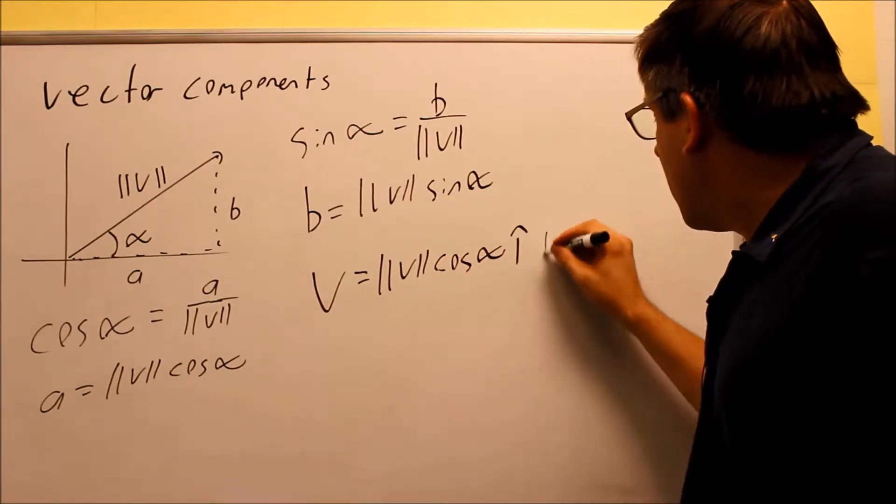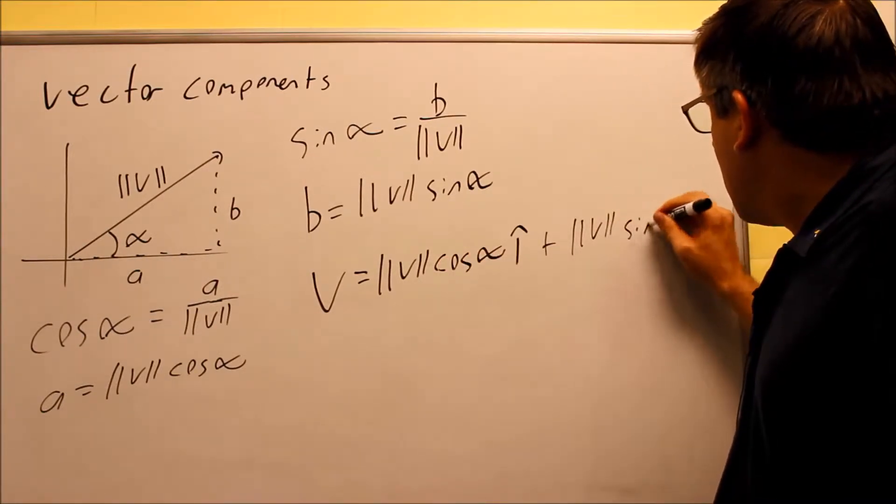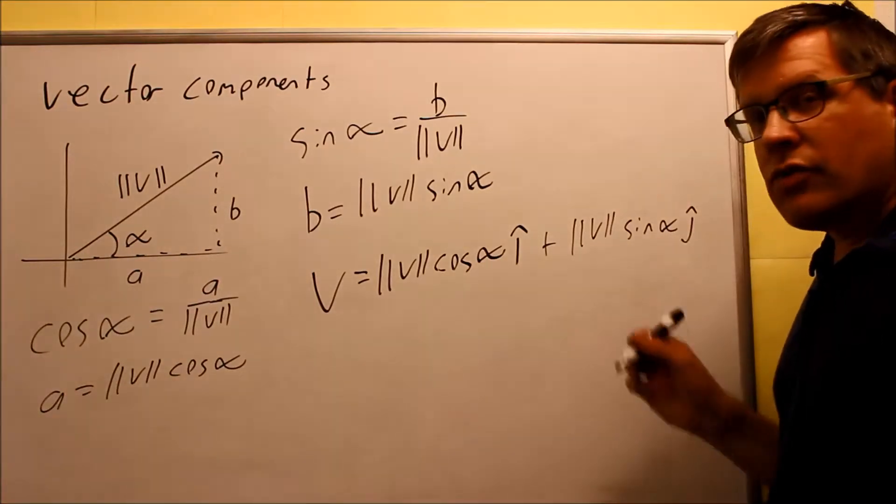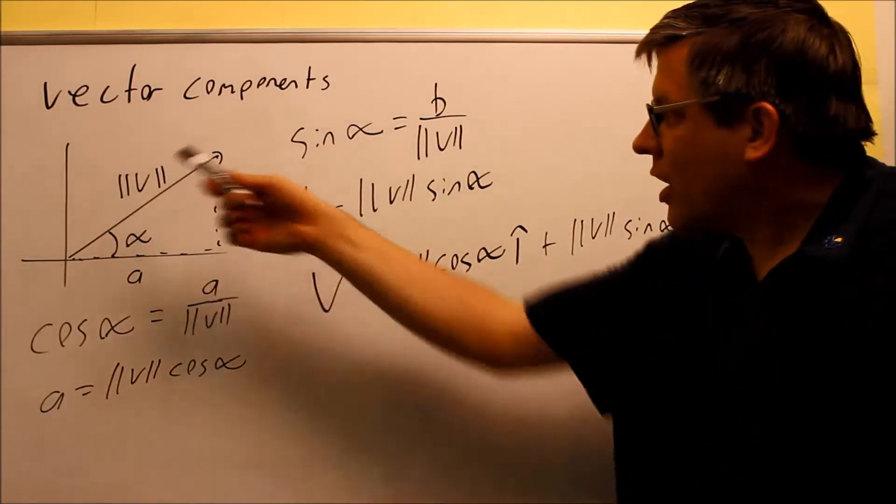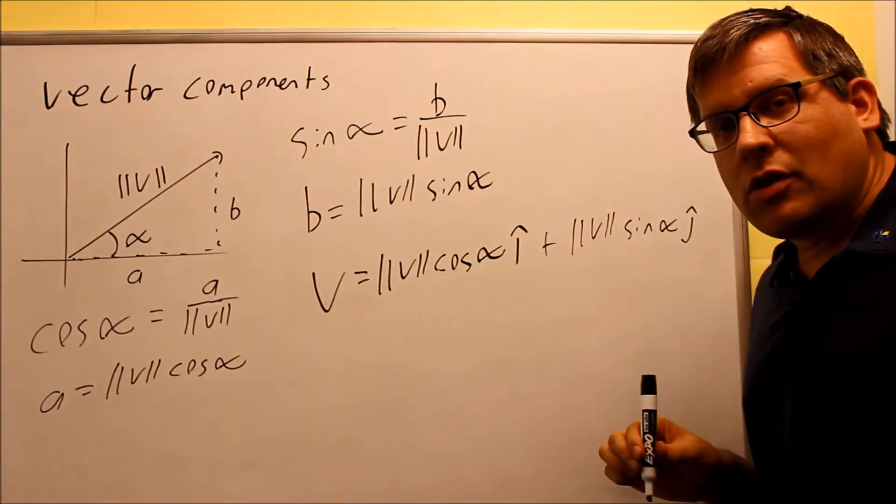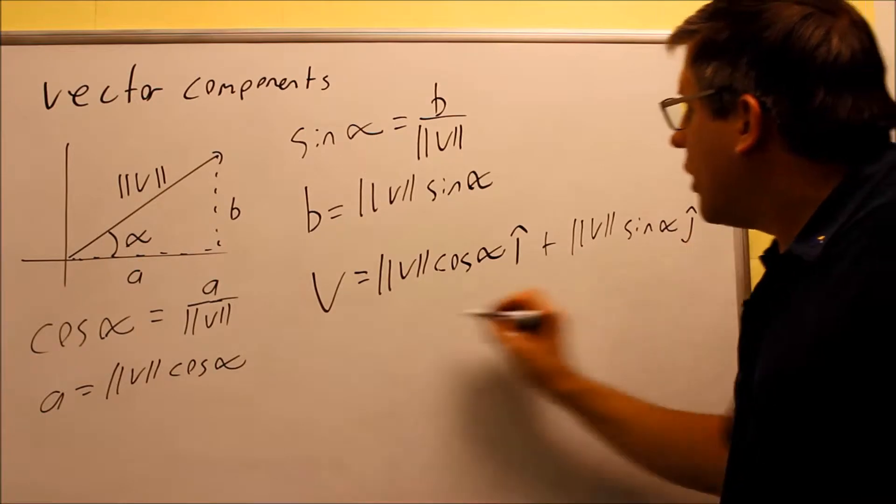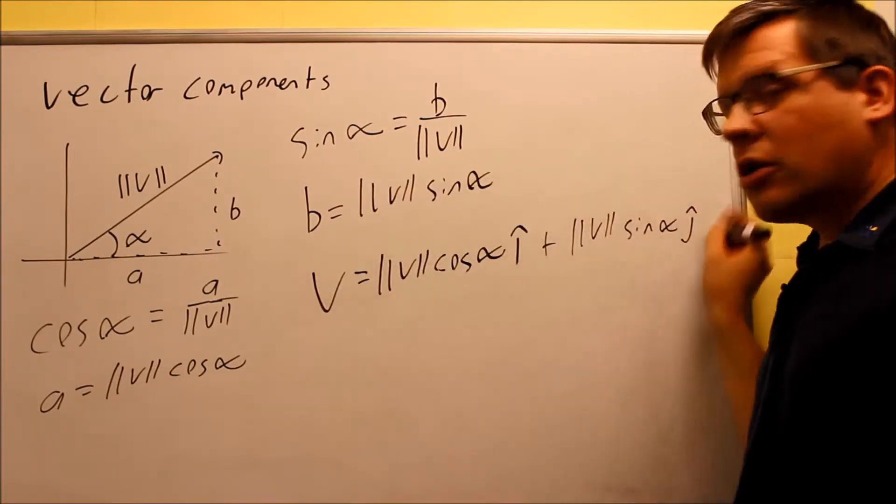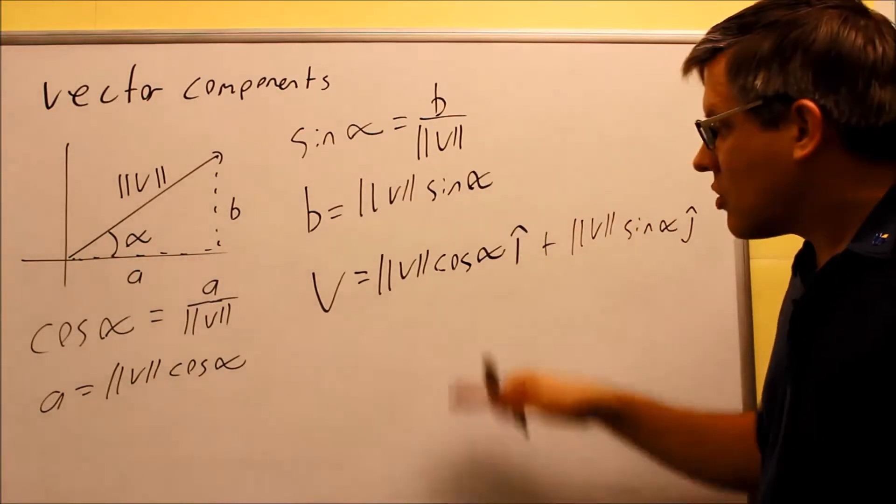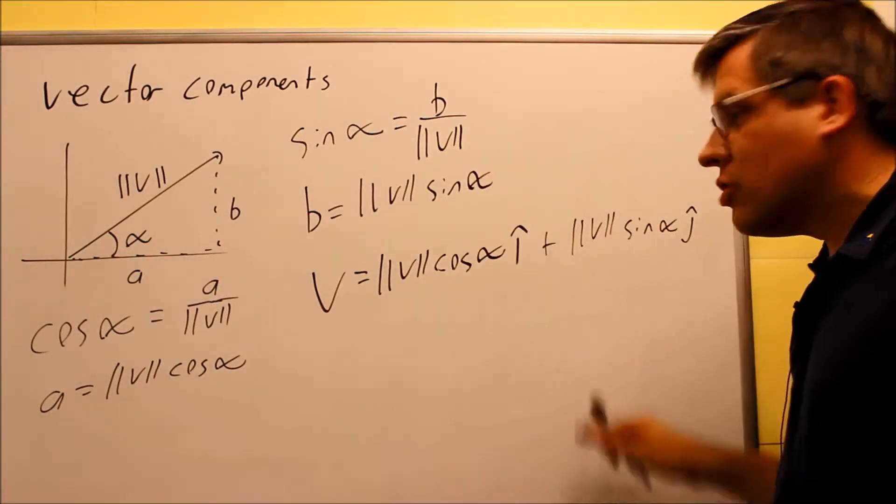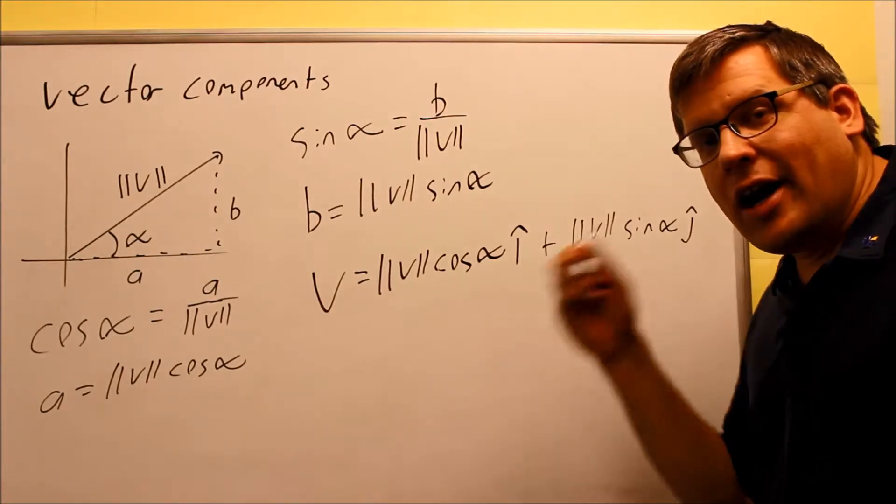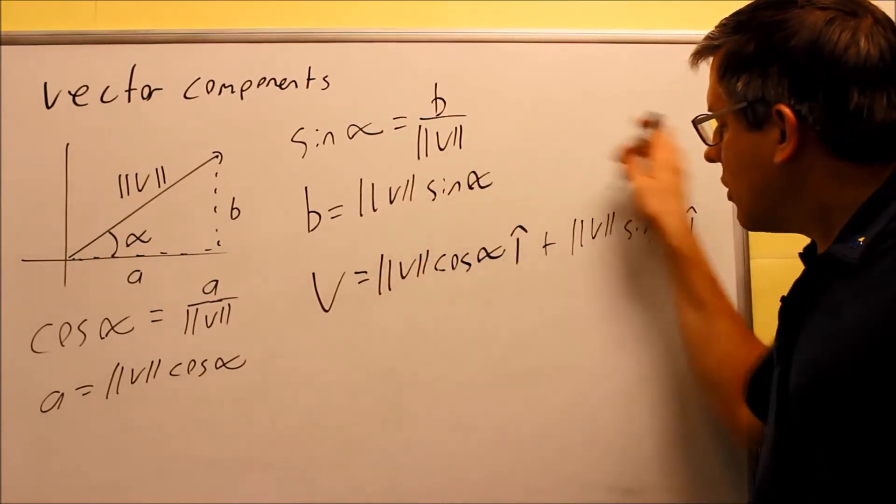And then the vertical component is magnitude of V sine alpha, and that's going to be my J. So what I've done is I've taken this information. If I only have a magnitude and an angle given, I'm able to recreate it and write it in vector component form. So this would allow me to do this for multiple vectors, so I could add all the I components and the J components together and get the result, which is eventually what we're going to be doing at the end of this section. So now we're just doing the setup for it.